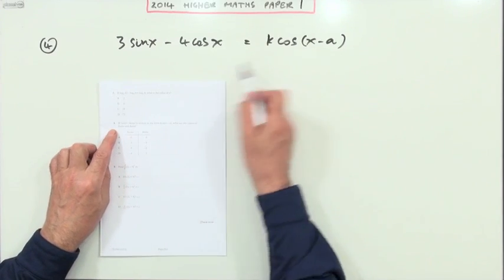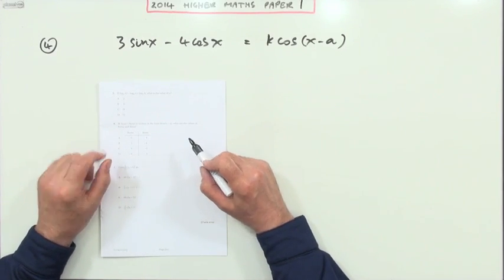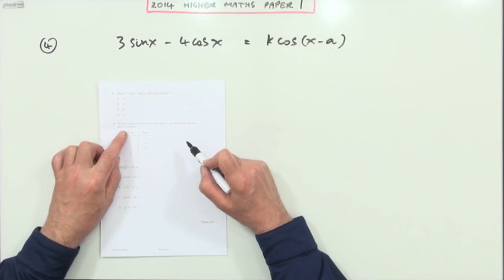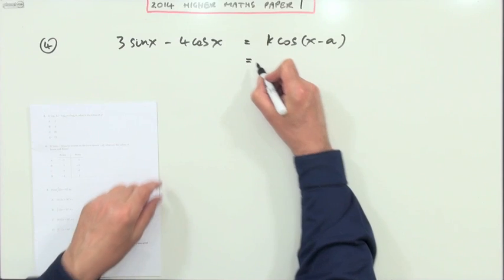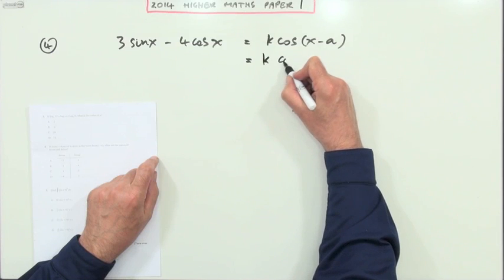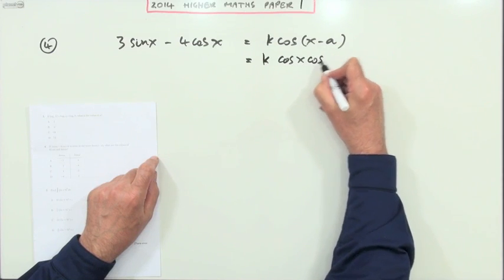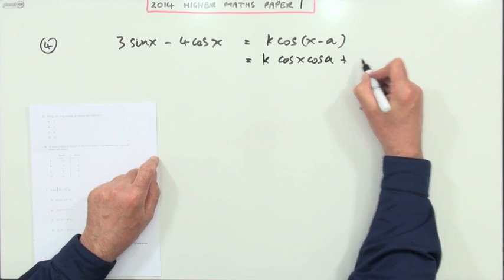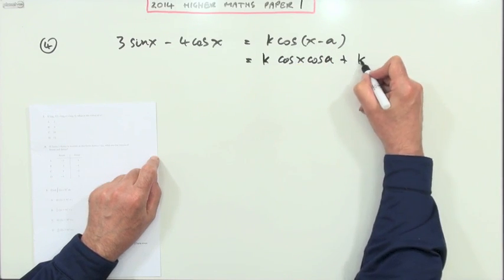Number 4: the wave equation here says what are the values of k cos a and k sin a? So maybe we should just expand that then. So 3 cos x becomes k cos x cos a, plus, but again k is multiplying both parts, k sin x sin a.